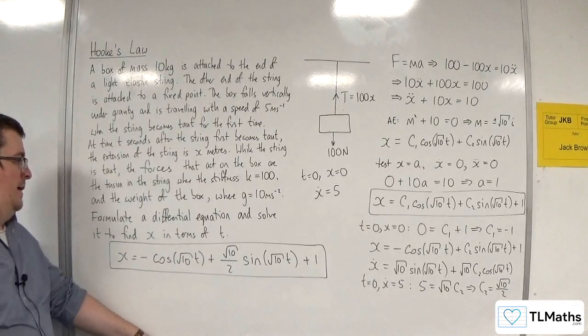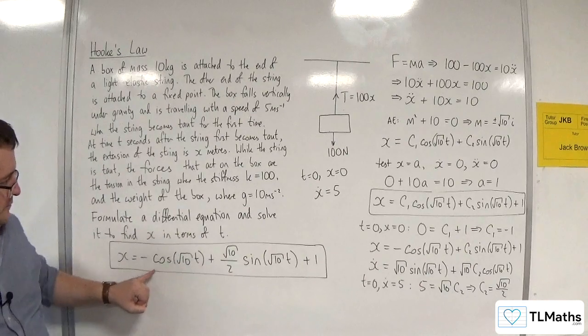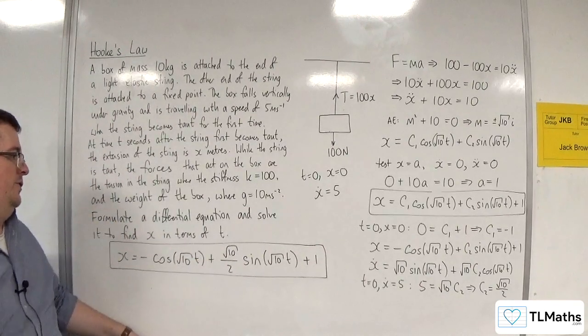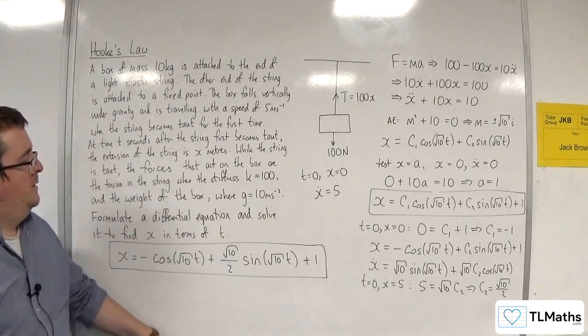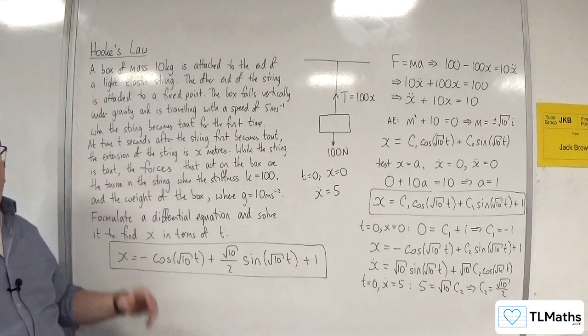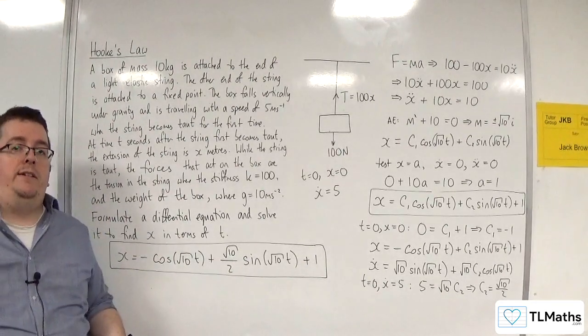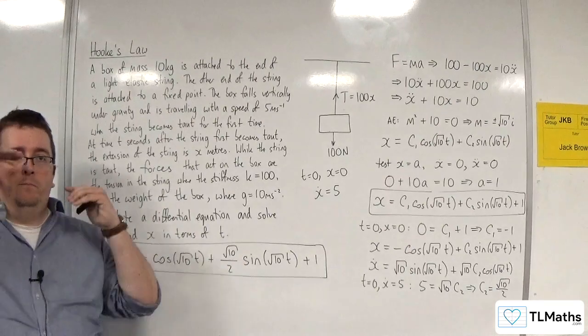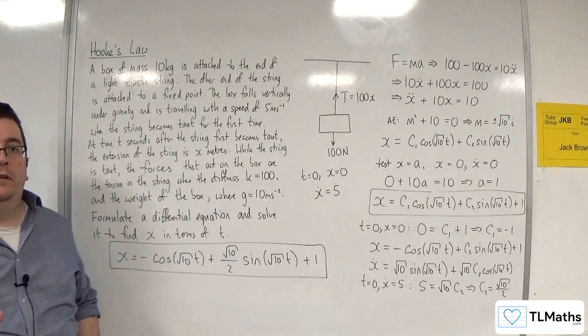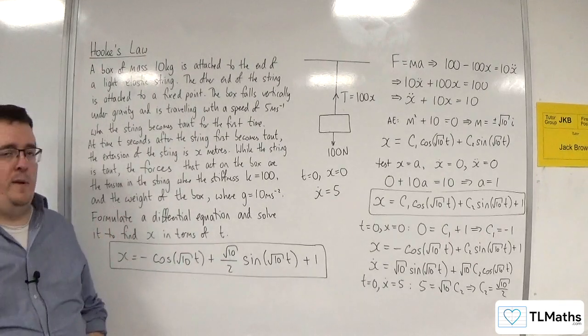So you could work out, write that into harmonic form if you wanted to, and figure out what it's actually going above and below to, so what's its minimum and maximum. But you could also work out from that, if the question had included what's the first time that the string is taut, you would need what's the maximum extension and at what time does that occur. So those other problems can also be involved.